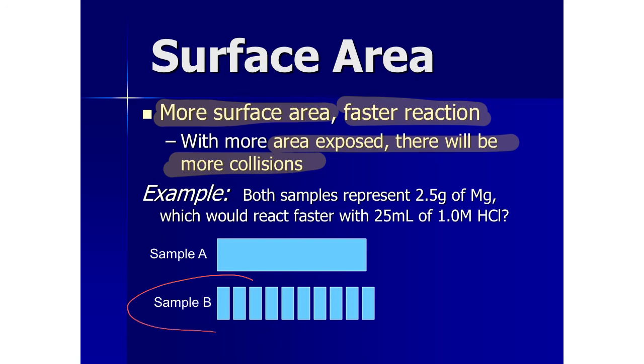So sample B should be reacting faster because it's got more surface area. So there's more particles that would be exposed to the reactants, specifically the acid. So therefore, more collisions, faster rate.